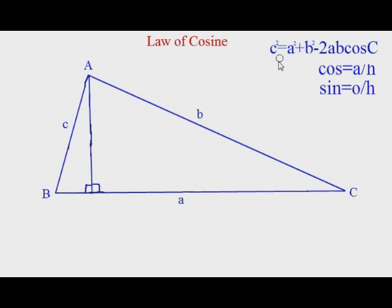In this video, I'm going to be deriving the law of cosine for you. You know that your law of cosine is c squared equals a squared plus b squared minus 2ab cosine c.